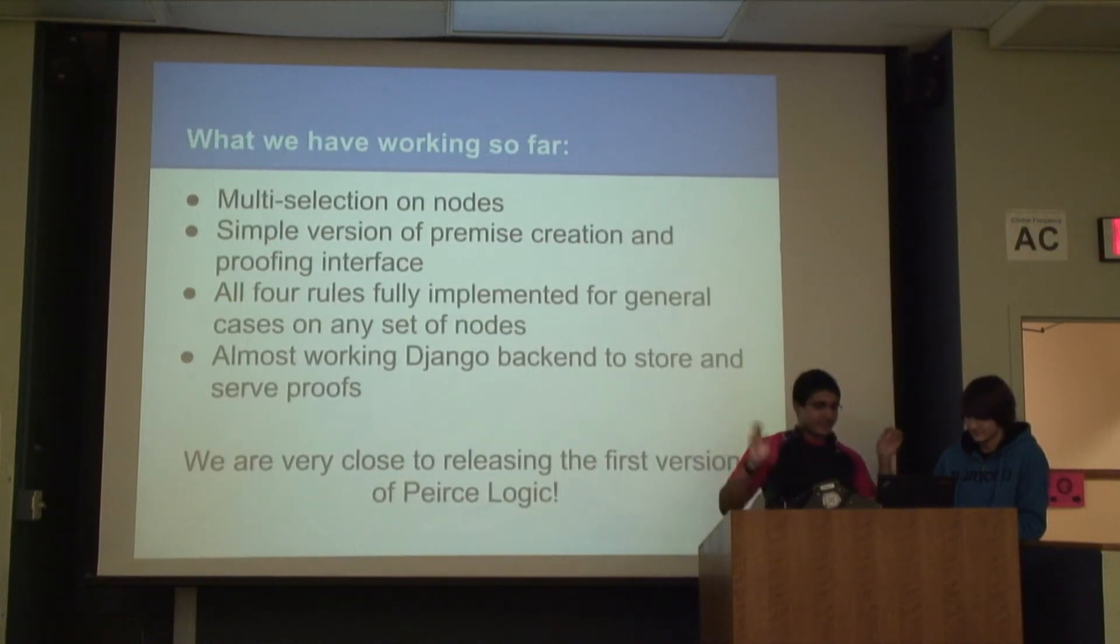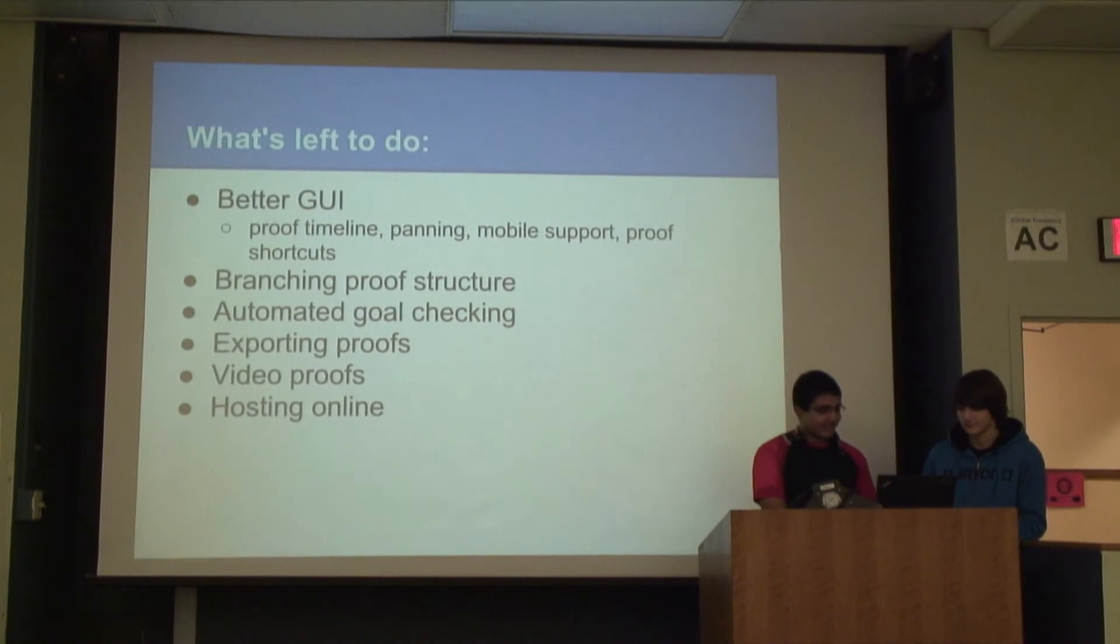So what did we do this semester? I think actually, yeah, someone just stopped working. We have multi-selection, which is kind of annoying to do. Select multiple things at the same time. And then, we have a basic interface for doing a whole proof now, which is nice. And we have all the rules implemented. And Derek has been working on the Django backend for posting all the proofs online. That's not obvious, but we're almost ready to post everything. And we still have a long way to go.